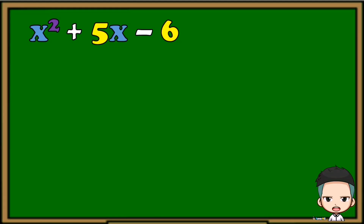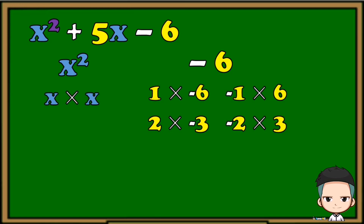Let's try another one: x squared plus 5x minus 6. Copy the first term and the last term first. Make sure to copy the operation before the last term. Then write down all the factors of the first term and the last term. For x squared, that is x times x. And for negative 6, we have 1 times negative 6, 2 times negative 3, negative 1 times 6, and negative 2 times 3.